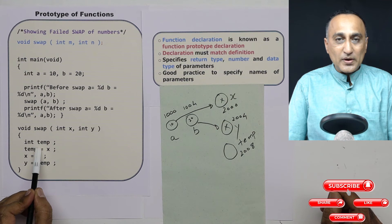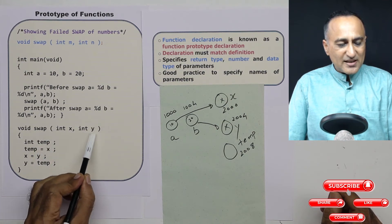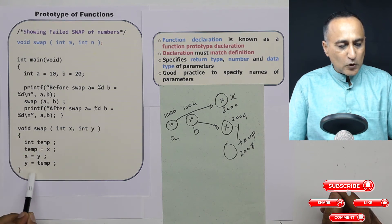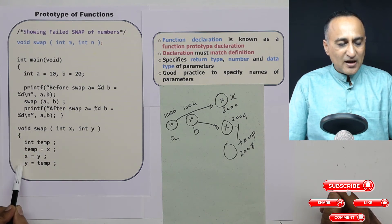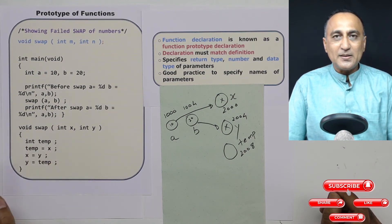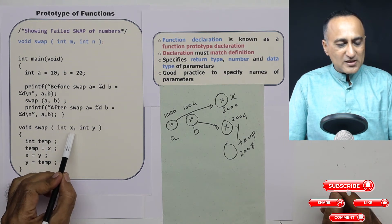Here what I have done is within swap, I have declared a local variable called temp. So all these variables x, y and temp are only having scope or life within this bracket. Outside this bracket, if you try to access temp or x, y here, you will get a compile time error.